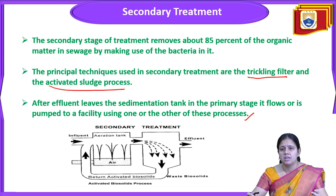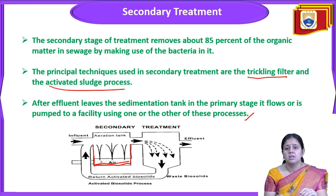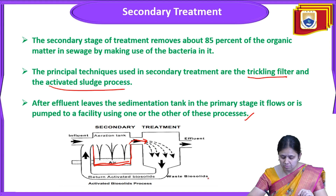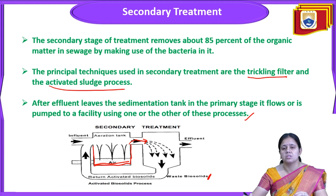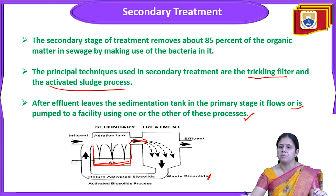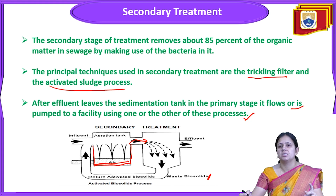When the effluent enters the secondary treatment, an aeration tank is present. In the aeration chamber, aeration is done for the water with air. After the aeration chamber, the water and biosolids are collected, and returned activated biosolids are present — this is called the activated biosolids process. Two types of methods are used: trickling filter and activated sludge process.